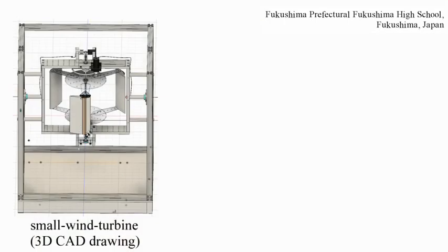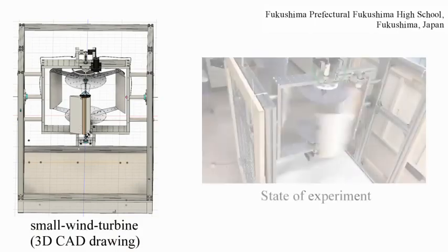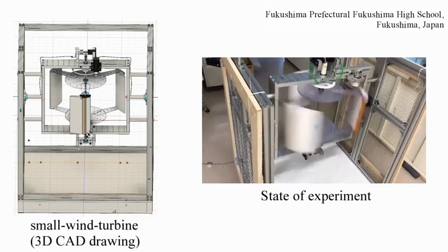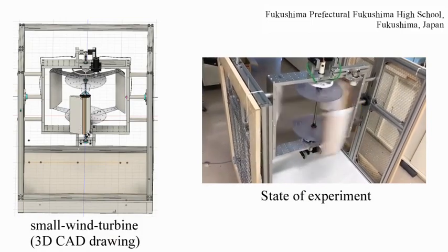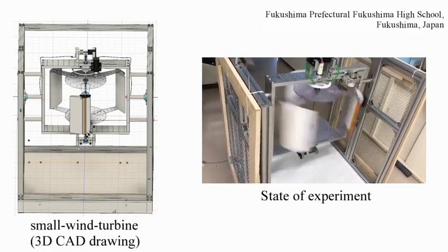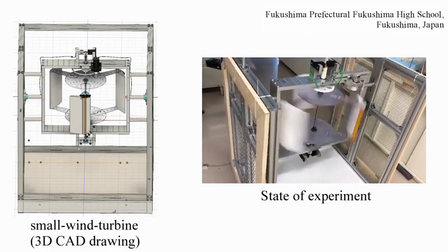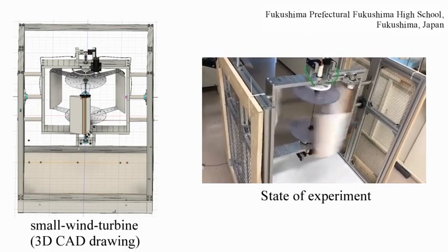Second, I will explain an overview and a result of our studies. To achieve the goal, we focused on plasma actuator. Plasma actuator is a device that uses plasma to generate an air flow. We designed and manufactured a small wind turbine equipped with plasma actuator and measured output voltage. As a result, we discovered that plasma actuator improved the efficiency of power generation.